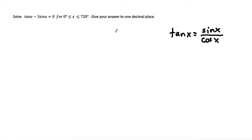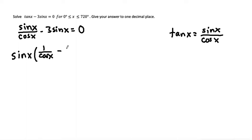So let's substitute that in first, and we get sine x over cos x minus 3 sine x is equal to 0. From here, now that we have a sine in each term, let's factor out that sine. So we'll make this sine x times, what's left here would be 1 over cos x, and then what's left in this term would be minus 3, and then bring down the equals 0.